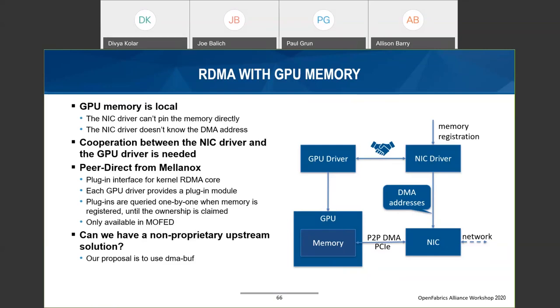The RDMA layer then uses GPU-specific functions to pin the memory and do the address translation. This has worked fine for many years, but the only issue is it is not in the upstream kernel — it is only available in the Mellanox version. So we want to see if we can have an upstream solution to achieve a similar result. Our proposal is to use DMA-BUF as the mechanism to do the information exchange.